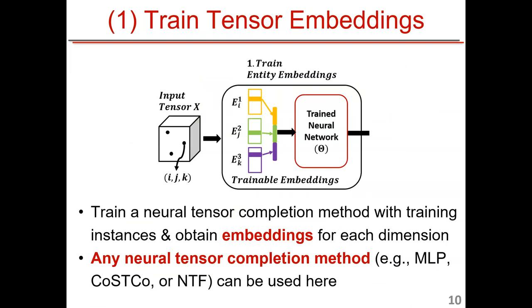The first step is to train a neural tensor completion method and obtain tensor embeddings. We can use any existing neural tensor completion method — for example, MLP, CoSTCo, or NTF. Given the original tensor, we train the model and obtain embeddings for each dimension. For movie rating data, this includes user embeddings, movie embeddings, and time embeddings. After training, we move to step two.